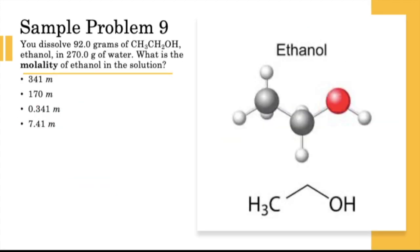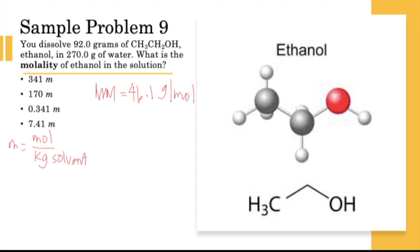Sample problem 9: You dissolve 92 grams of ethanol (molar mass = 46.1 g/mol) in 270 grams of water. What is the molality? Moles of ethanol = 92 ÷ 46.1. Divide by 0.270 kg of water. The answer is 7.41 m.